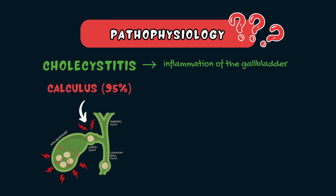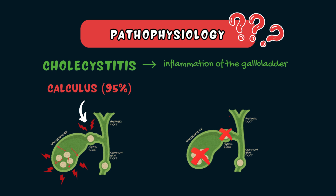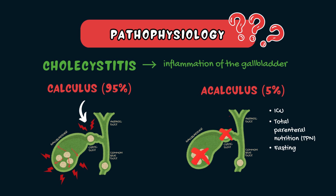This is known as calculus cholecystitis. In about 5% of cases, gallbladder inflammation is seen in the absence of gallstones, and this is known as acalculus cholecystitis. The pathophysiology of acalculus cholecystitis can be multifactorial. It's often seen in critically ill patients who are in the ICU receiving total parenteral nutrition, or those who've had long periods of fasting, or those who've had an ileus or a bowel obstruction. In all of these patients, there is no food in the small intestine, which means that the gallbladder is no longer stimulated to contract and release bile. This can lead to bile stasis, and subsequently inflammation and infection of the gallbladder.